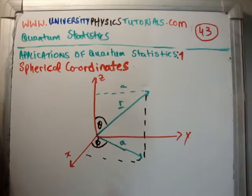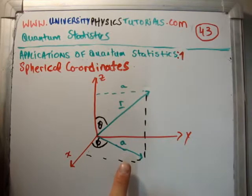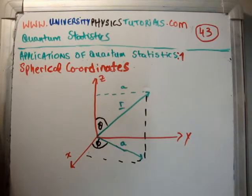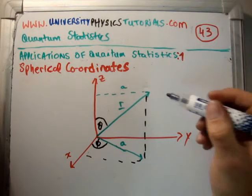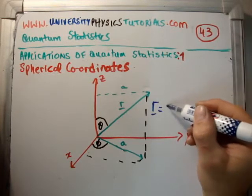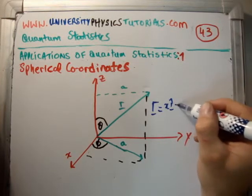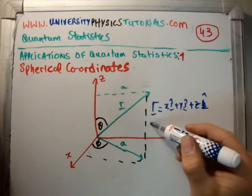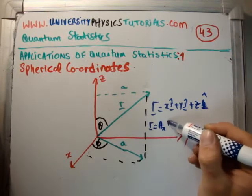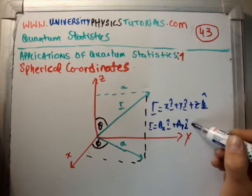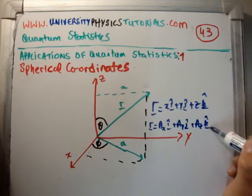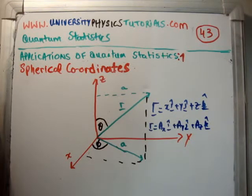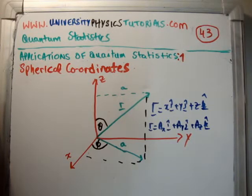Note that the projection of R onto the xy plane can also be drawn up here, between the z-axis and the vector itself. In rectangular coordinates we would say the vector R is equal to x·i-hat plus y·j-hat plus z·k-hat. Or you could say R is equal to A_x·i-hat plus A_y·j-hat plus A_z·k-hat, where we take the gradient of it. A_x is the rate of change of your vector in the x direction, A_y in the y direction, and so on.